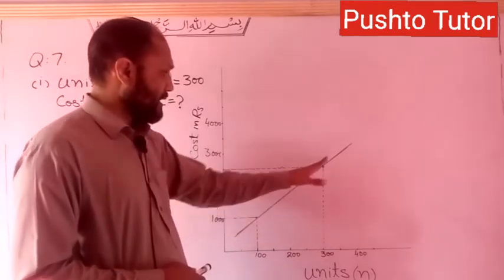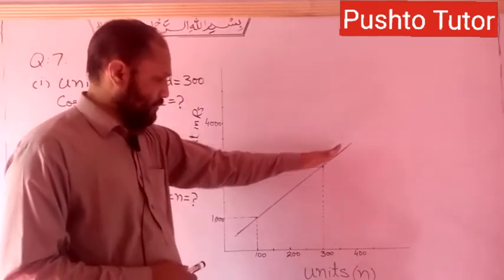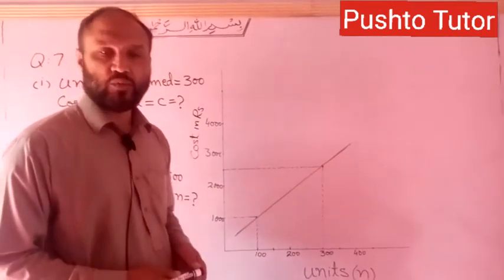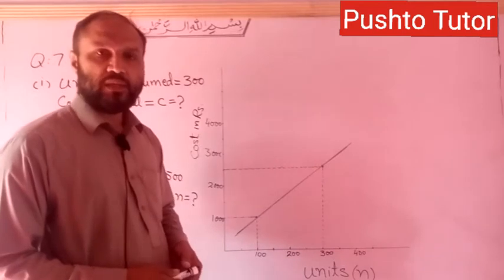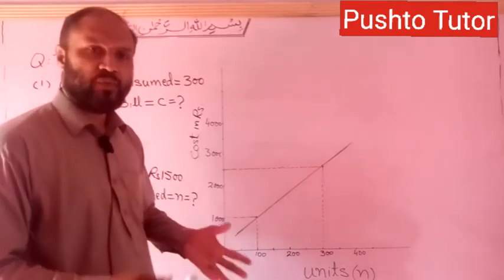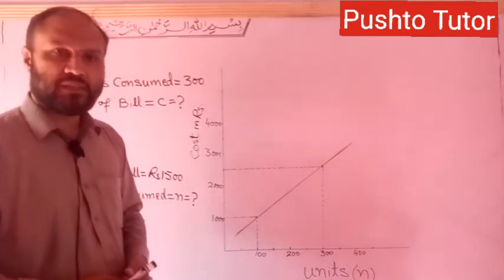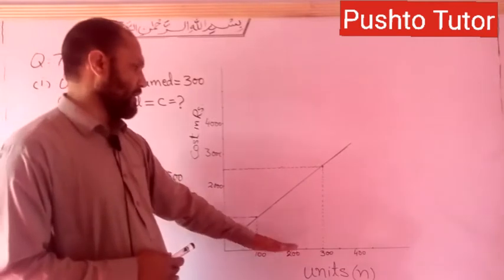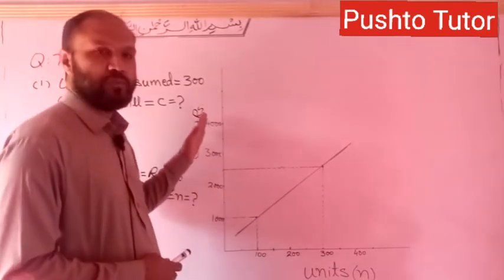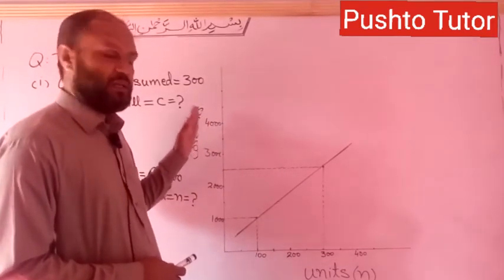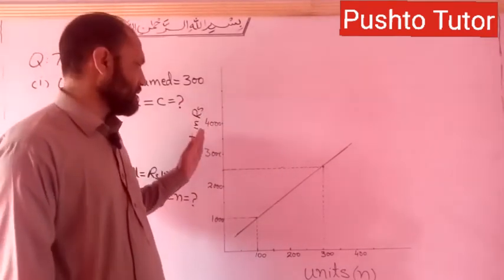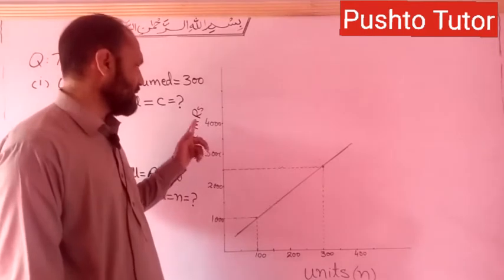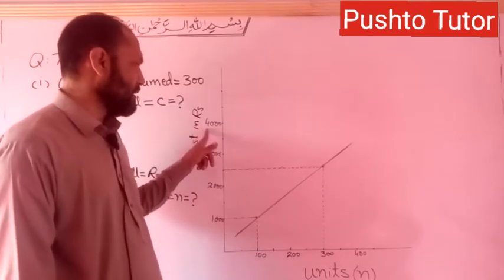We have one line on the graph. We have a prediction that for some units the cost is 4,000 rupees.